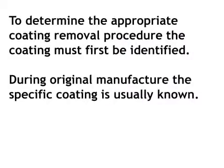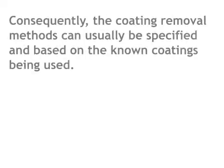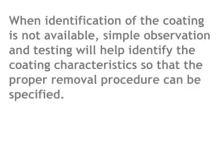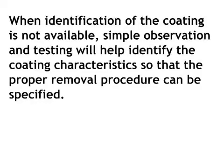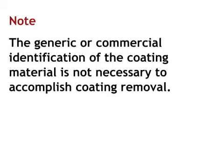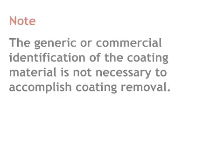To determine the appropriate coating removal procedure, the coating must first be identified. During original manufacture, the specific coating is usually known; consequently, the coating removal methods can usually be specified based on the known coatings being used. When identification of the coating is not available, simple observation and testing will help identify the coating characteristics so that the proper removal procedure can be specified. The generic or commercial identification of the coating material is not necessary to accomplish coating removal.